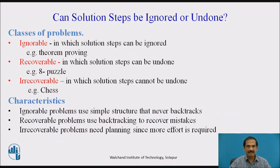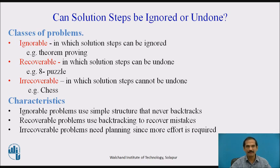The second key aspect is: can a solution step be ignored or undone? There are two types of problems. Ignorable problems are those in which certain solution steps can be ignored because they have been inbuilt in higher solutions — for example, in theorem proving. Recoverable problems are those in which steps can be undone; for example, in the 8-puzzle, if we take a particular step and detect we are not reaching our solution, we may backtrack and take another path.